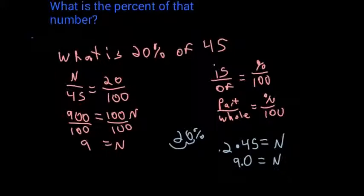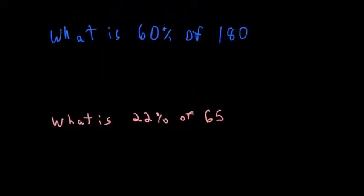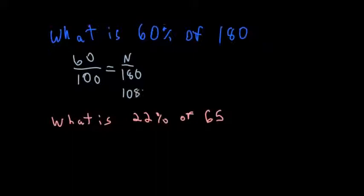All right, so let's do a couple more examples. So the first one is what is 60% of 180. We're going to solve this with the proportion and equation. So first we'll do the proportion. I got 60 over 100—that's my percent—equals is. I don't know that, so that's my number I'm trying to find, over my of, of 180. So now I'm going to cross multiply. So 60 times 180 gives me 10,800 equals 100N.